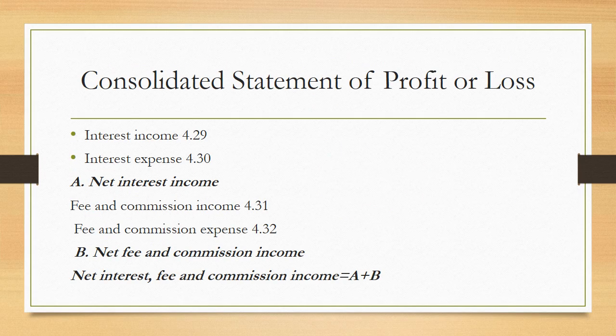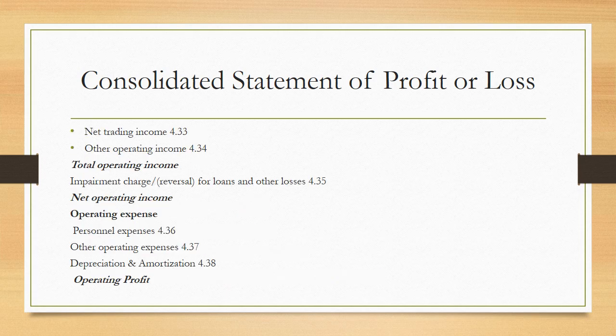Now moving toward the consolidated statement of profit and loss for banking and financial institutions operating in Nepal. The first item is interest income and the second is interest expenses; net interest income comes from the first minus the second. Then fees and commission income minus fees and commission expenses gives net fee and commission income. Net interest, fee and commission income is the summation of net interest income plus net fee and commission income. Trading income and other operating income provide the total operating income; after the charge for loan and other losses, we get net operating income.